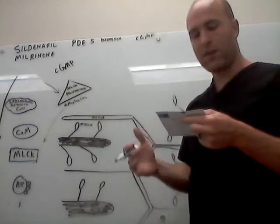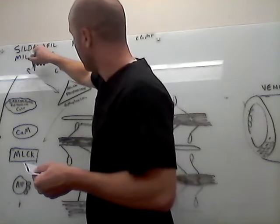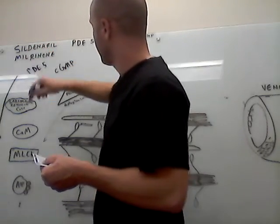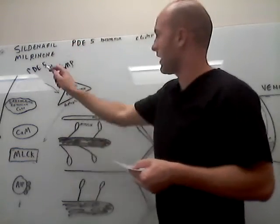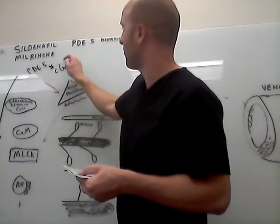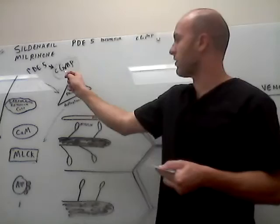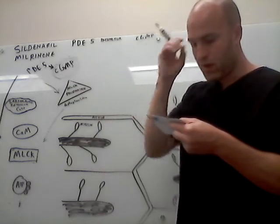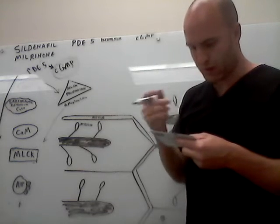That means that phosphodiesterase-5 inhibitors - so here's phosphodiesterase-5. So that breaks this down. So if you have an inhibitor of this, it means you're going to have more of this. And if you have more of this, it means you're going to have - let me just read it here.